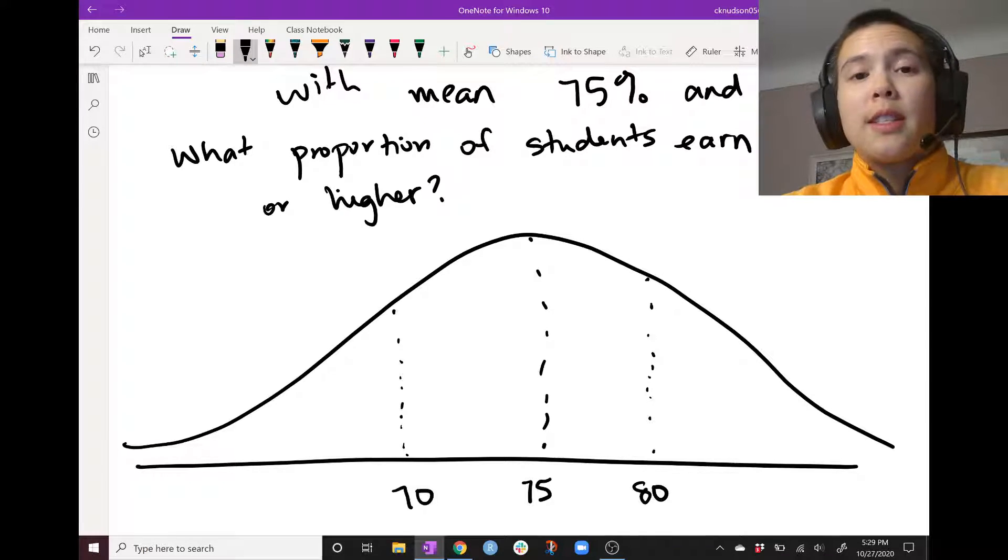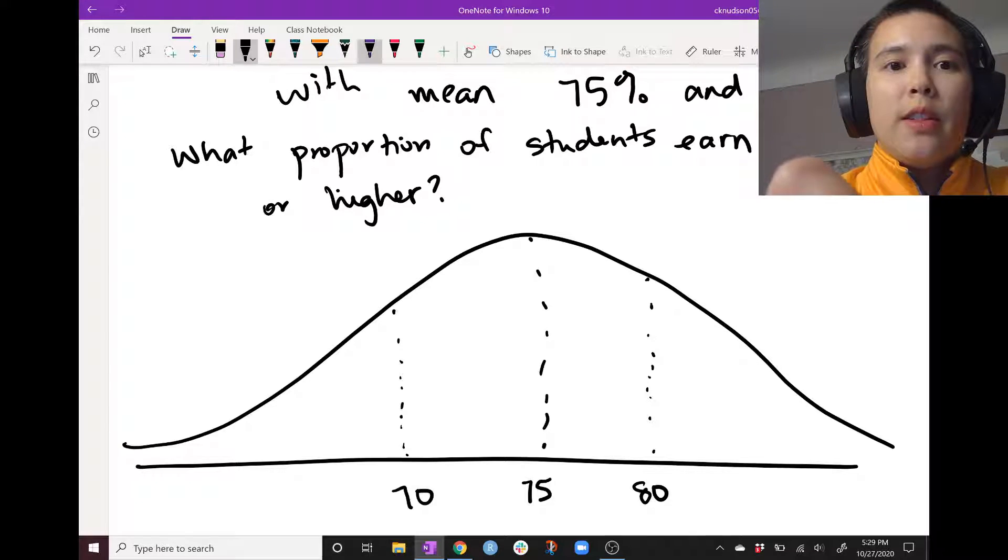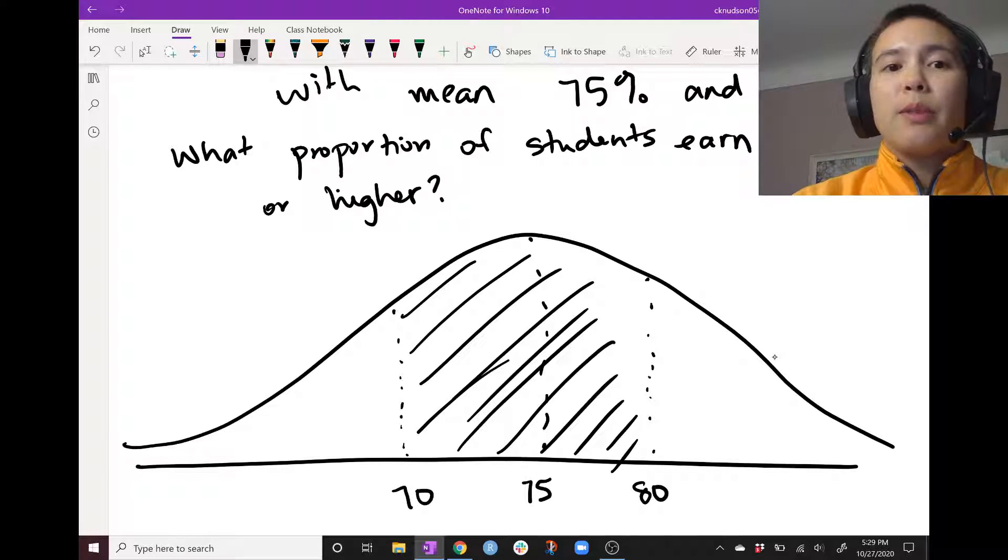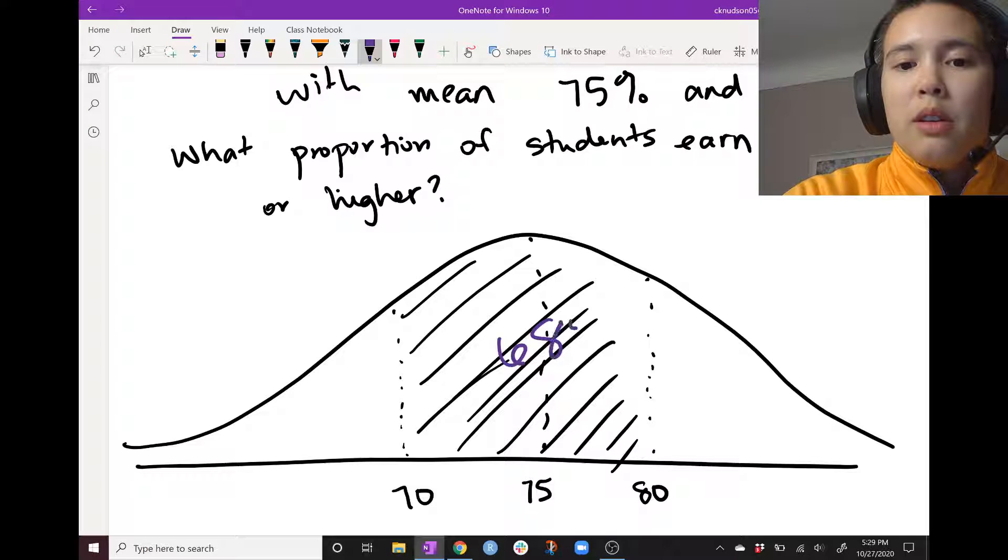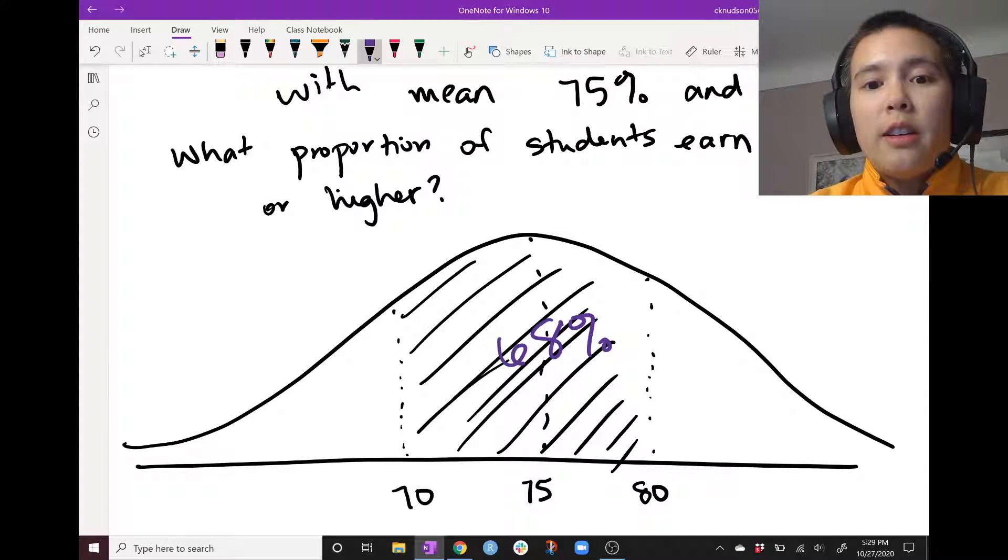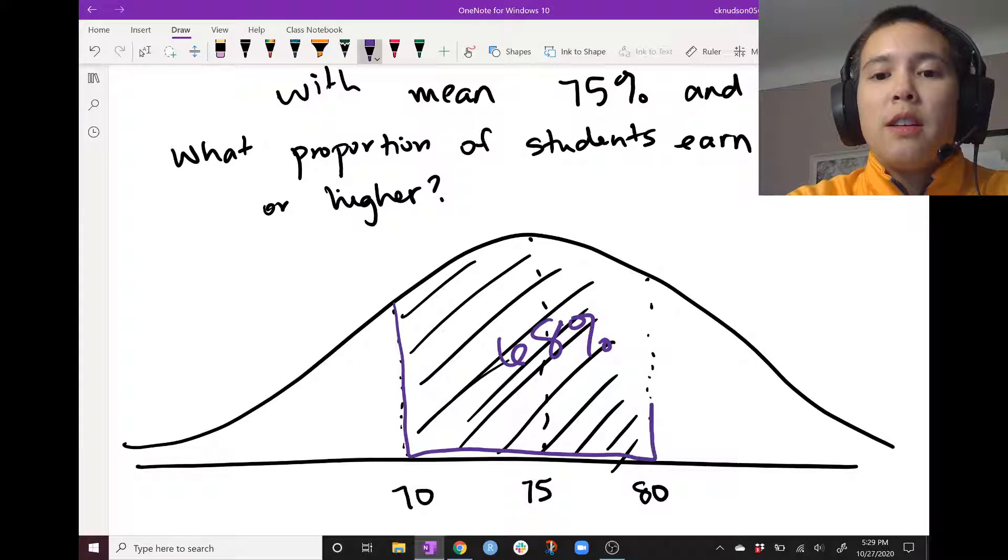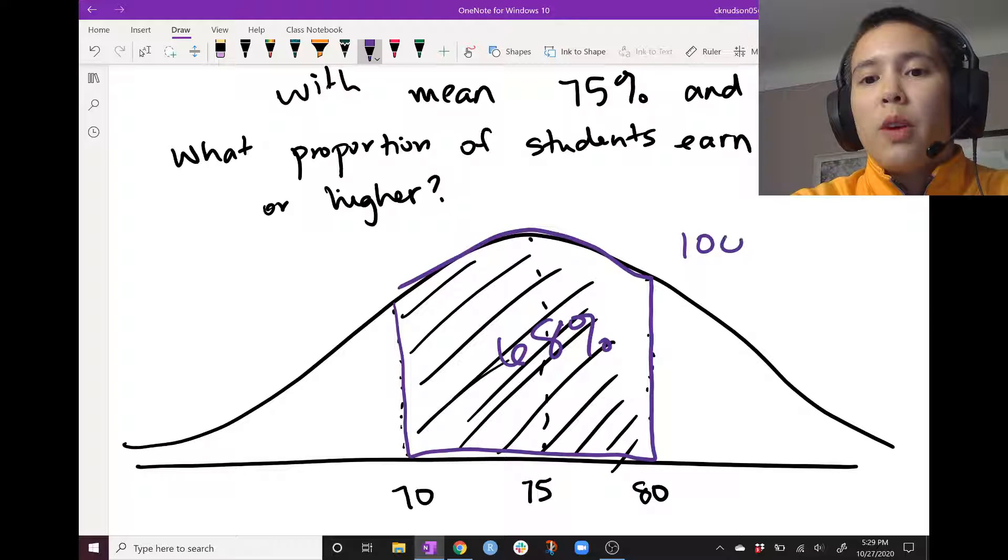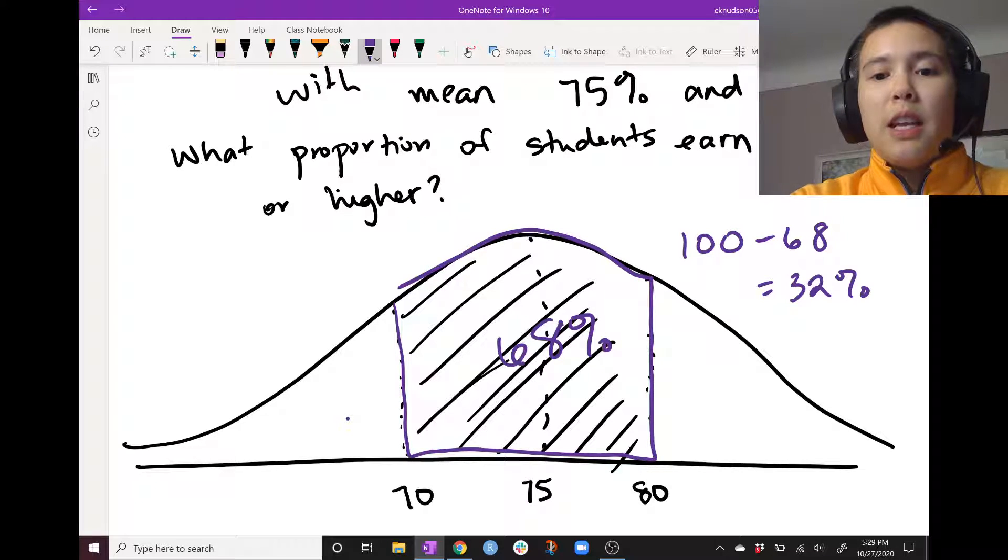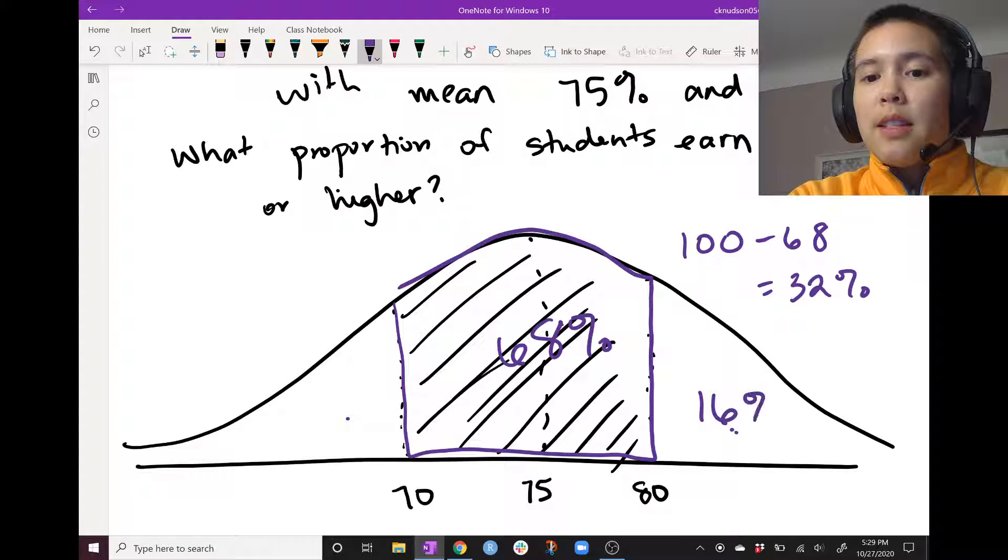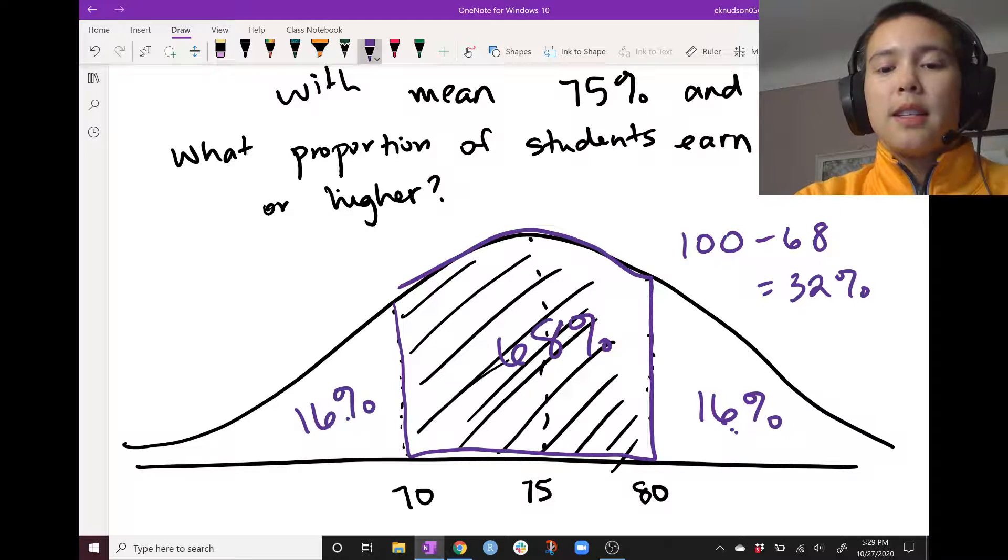Now, we know that according to our 68, 95, 99.7% rule that in this shaded area here, we have about 68%. So if the total area under the curve is 100% and this much of it is 68%, then 100 minus 68 equals 32% is left over. And it's split evenly between these two tails because the normal distribution is symmetric.